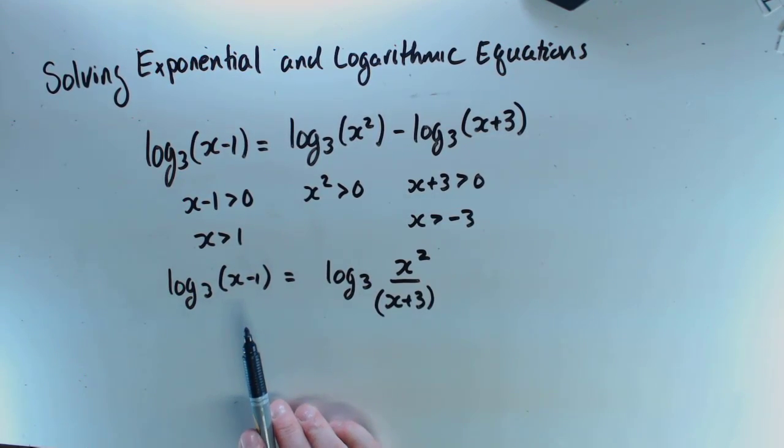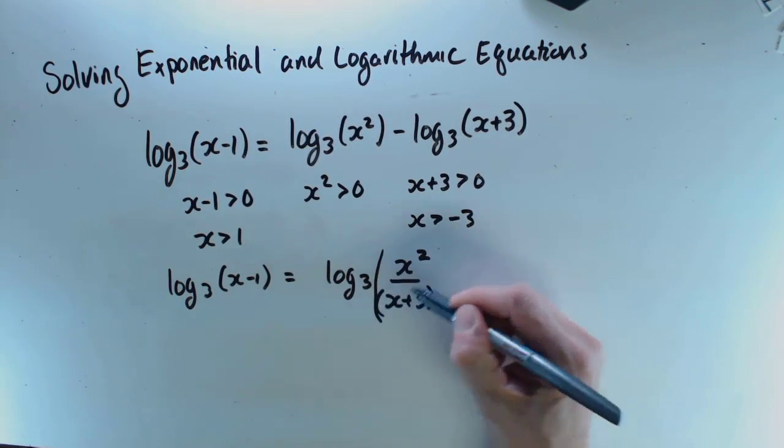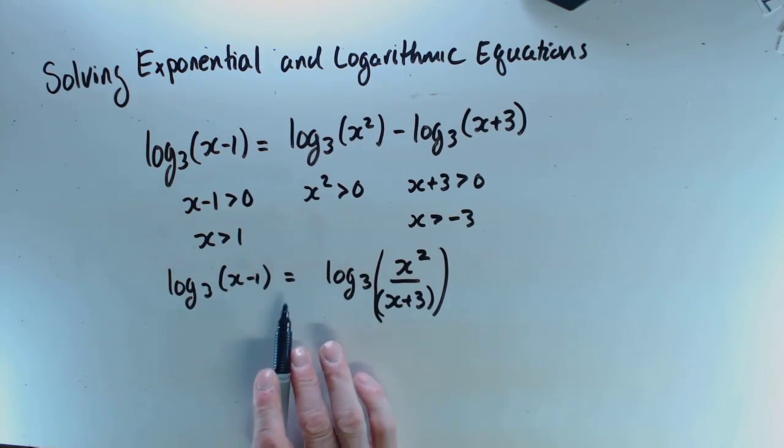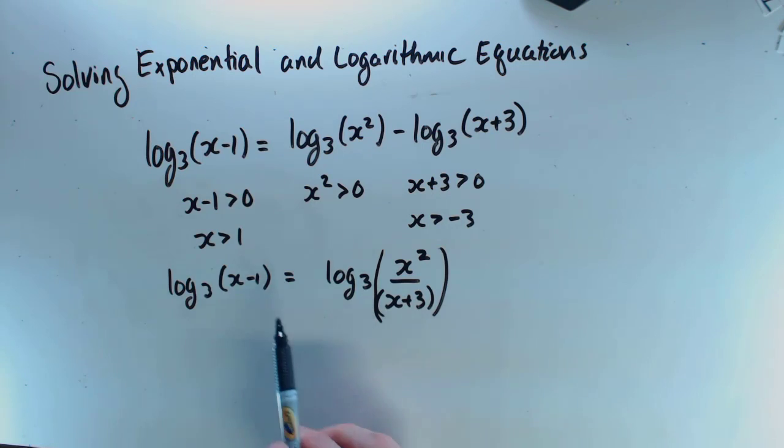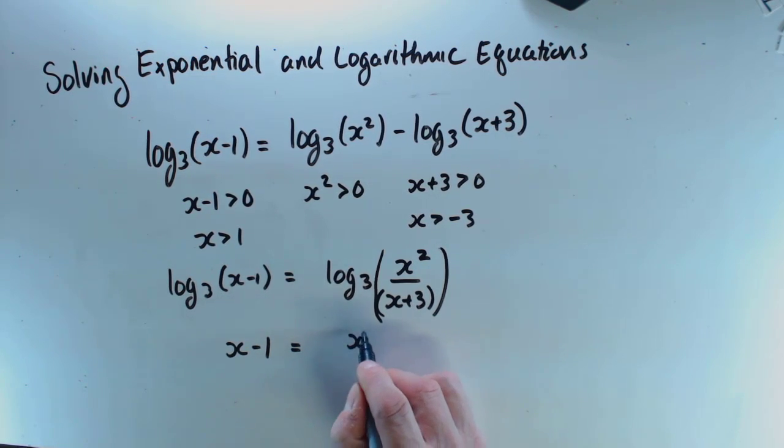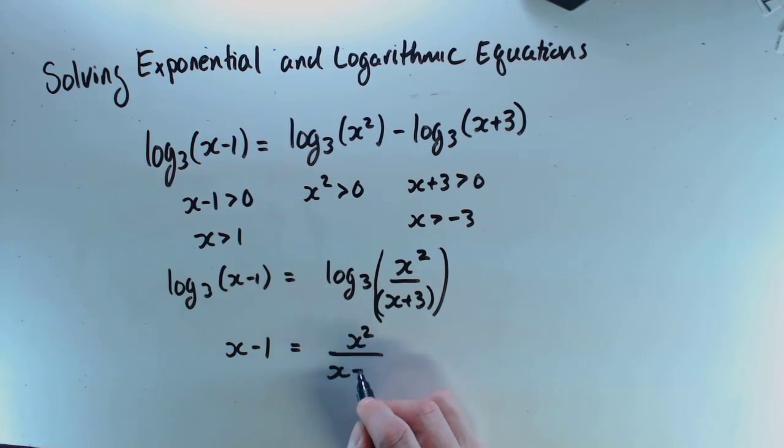Okay, now since these two logs are equivalent, this is one of those rare opportunities where I can say the arguments have to be equivalent since the logs are equivalent. So x minus 1 equals x squared over x plus 3.